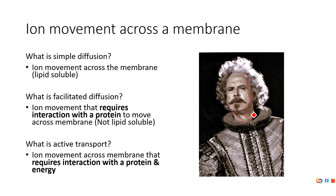With active transport, we're going against the gradient. One of the most important core concepts is that things generally move from high to low — whether that's concentration, pressure, or charge. With active transport, we're going against that gradient. Think of going downstream versus upstream on a river: going downstream you just float, but going upstream you have to paddle against the current. Active transport is going upstream — we need a pump, and that pump needs energy to work.